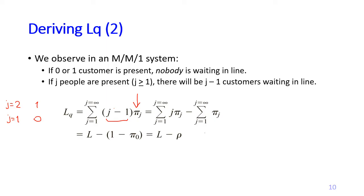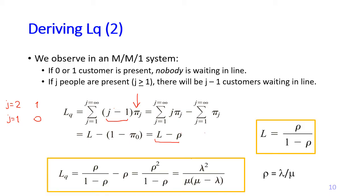Finally, we have LQ equals L minus rho. Combining this with the previous formulas and recalling that rho equals lambda over mu, we have all the formulas that work to calculate LQ.